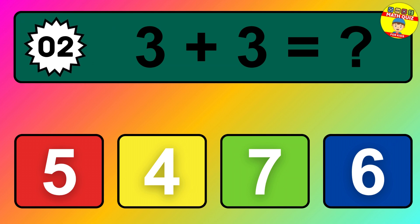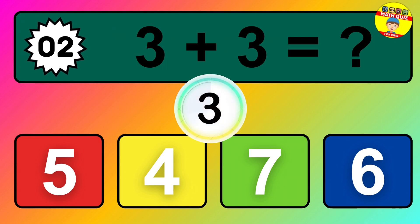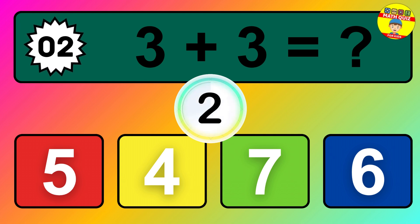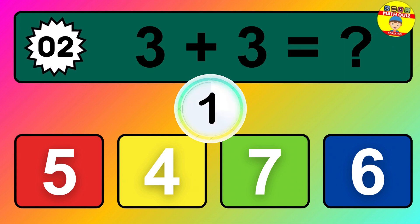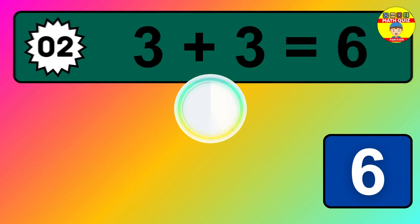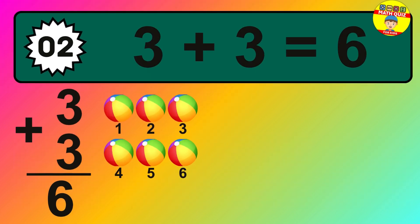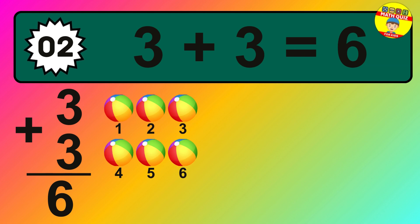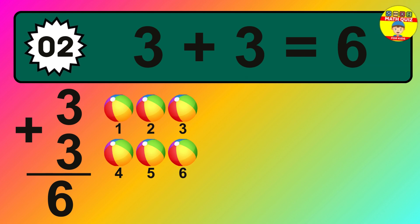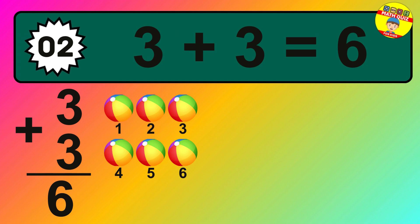Question 2. 3 plus 3 equals what? So the answer is 3 plus 3 is 6. Let's count it: 1, 2, 3, 4, 5, 6.